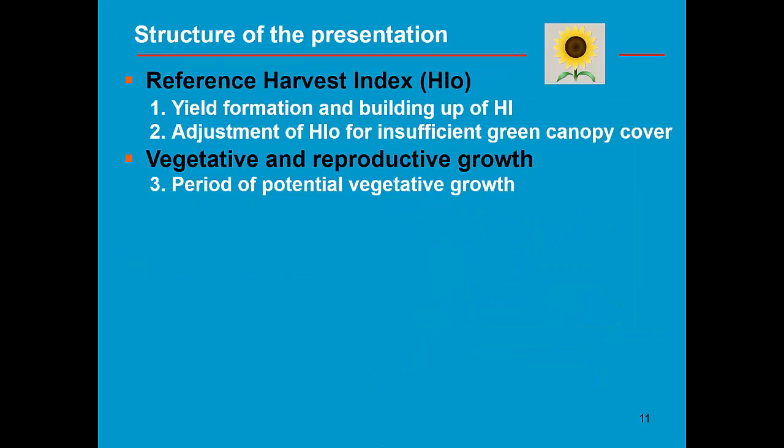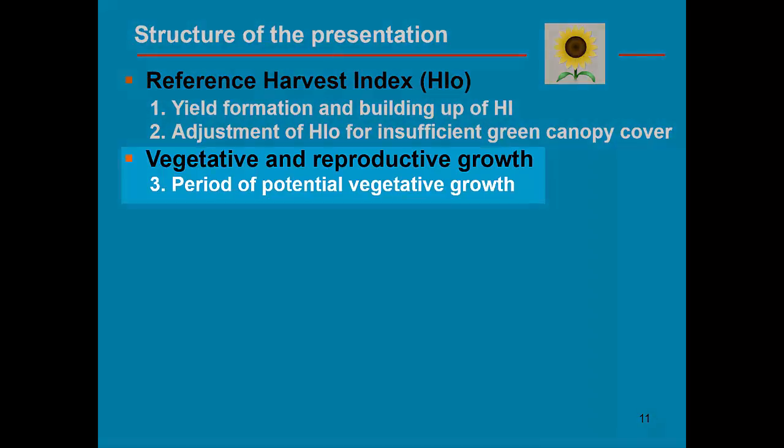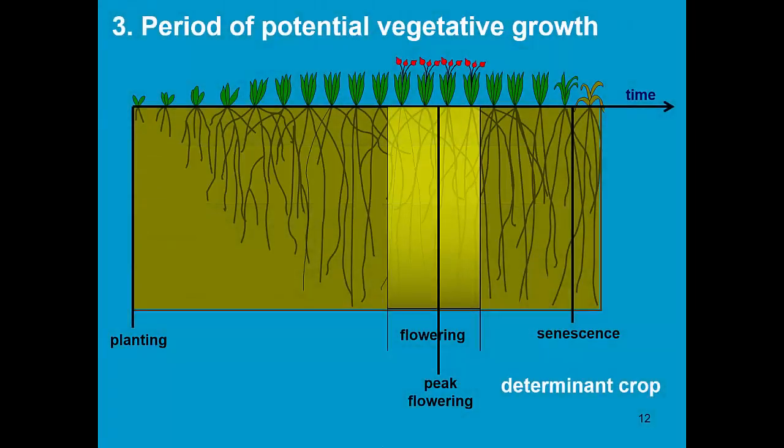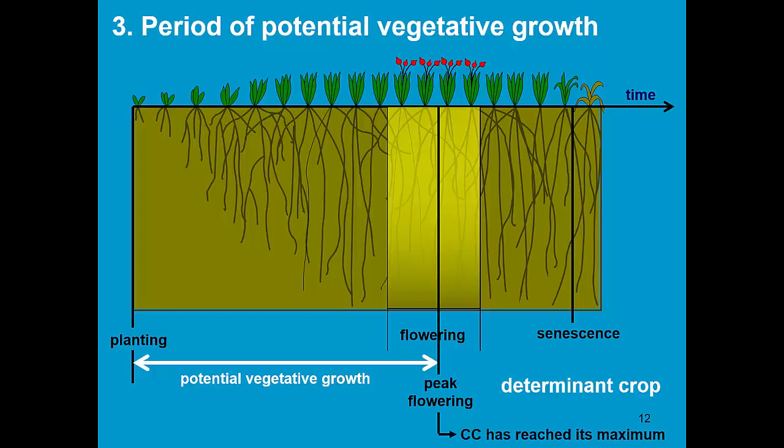Before looking at the stresses affecting harvest index, it is necessary to understand in which period we have potential vegetative growth. Here we see the crop development in function of time. This is a determinate crop, and it means it makes a clear distinction between vegetative growth and yield formation.